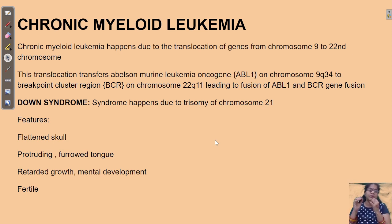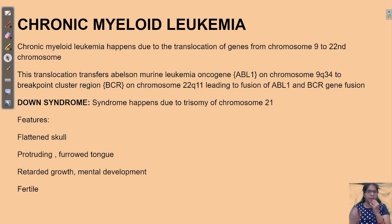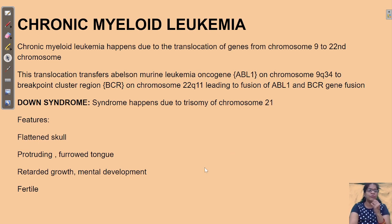Trisomy means the presence of three chromosomes at a particular location — instead of having two, you have an extra chromosome. Down syndrome is mainly due to trisomy of chromosome 21. People with Down syndrome are still fertile because allosomes are fine with them, but the autosomes are not fine. Please remember this.